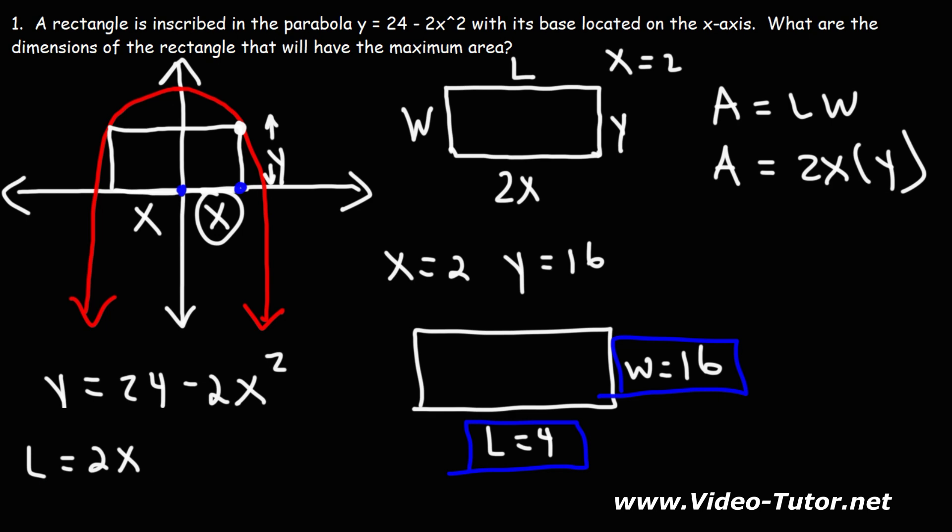If you want to determine the actual maximum area, we just got to multiply these two numbers. So 4 times 16, it's going to be 64 square units. You can also plug in these values into this equation, and you'll get the same thing. So that's it for this problem.